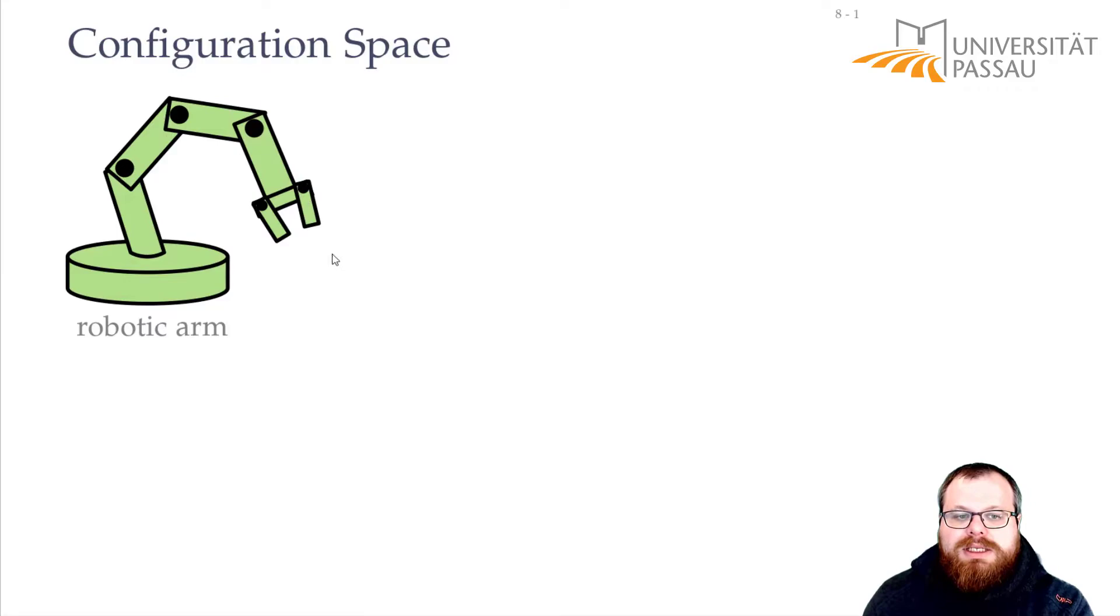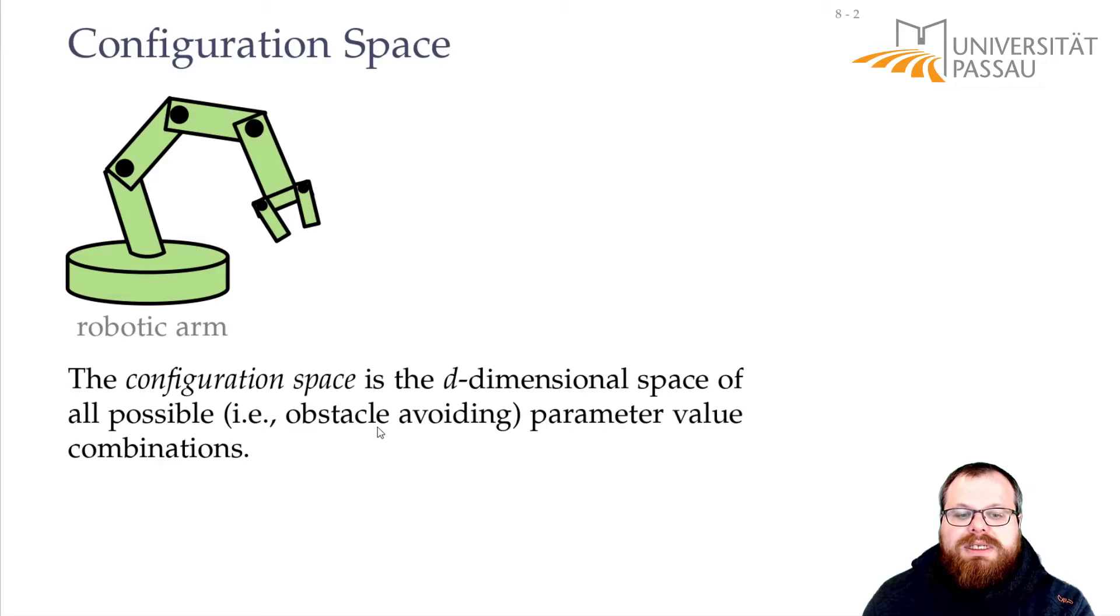The configuration space is now the d-dimensional space of all possible parameter-value combinations. So for our model, since we have two degrees of freedom, it's a two-dimensional space. And it's all those parameter-value combinations that are possible. That means they avoid the obstacles.